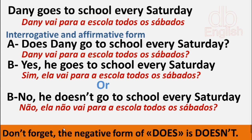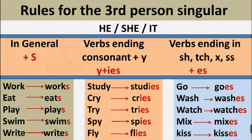Don't forget: the negative form of 'does' is 'doesn't'. Rules for the third person singular — he, she, it. In general, add S. For example: work → works, eat → eats, play → plays, swim → swims, write → writes.